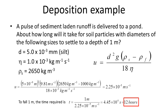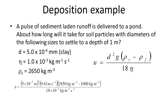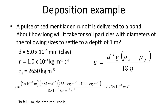Now let's do the third example with clay-sized particles. The diameter is 5×10⁻⁴ mm, or 5×10⁻⁷ m after unit conversion. The settling velocity is 2.25×10⁻⁷ m/s. Again, dropping the diameter by one order of magnitude decreases the settling velocity by two orders of magnitude. The time to fall one meter is 4.45×10⁶ seconds, or 51 days.